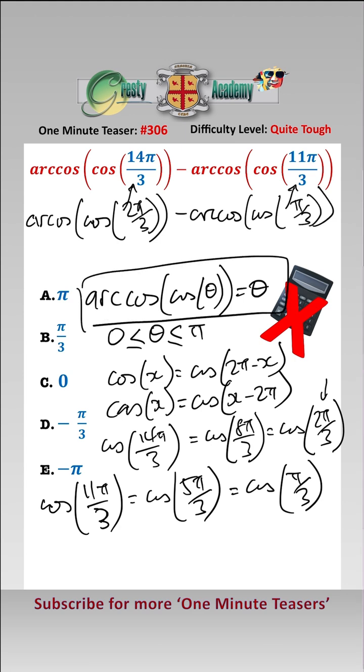And we can now use our formula arccos cos theta equals theta and that becomes 2 pi over 3 minus pi over 3 which is pi over 3, which is answer B.